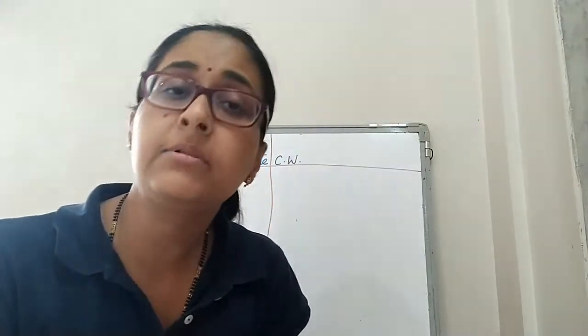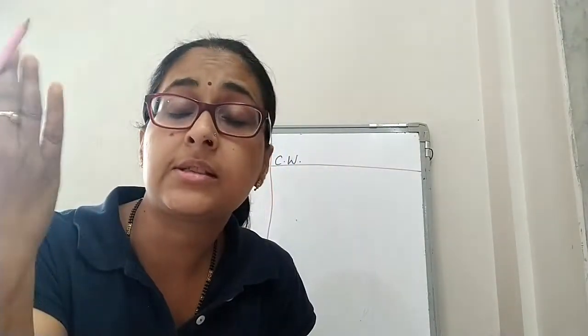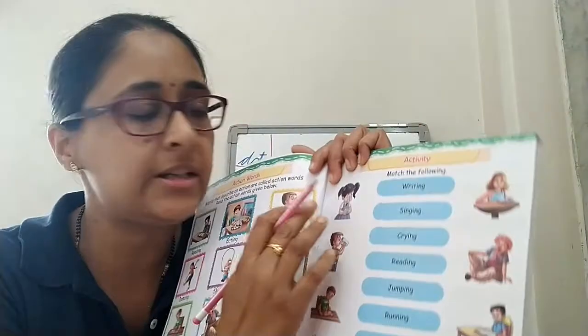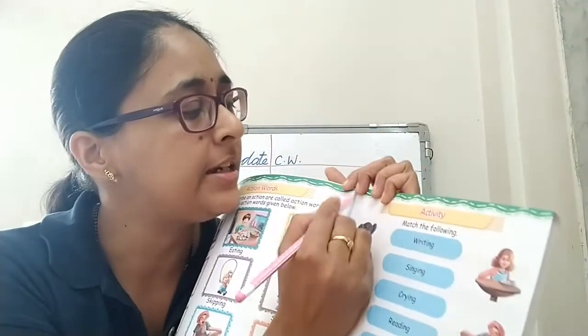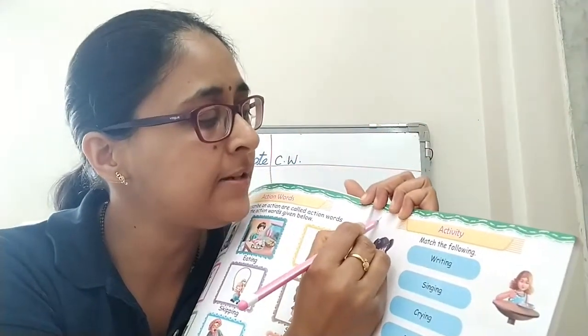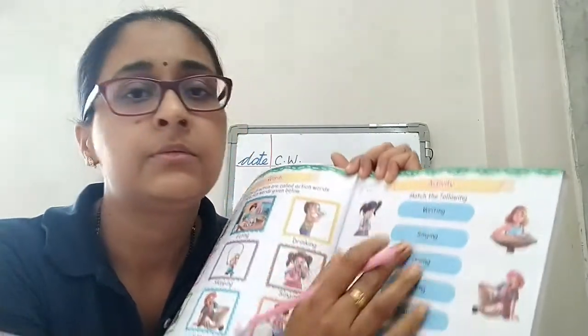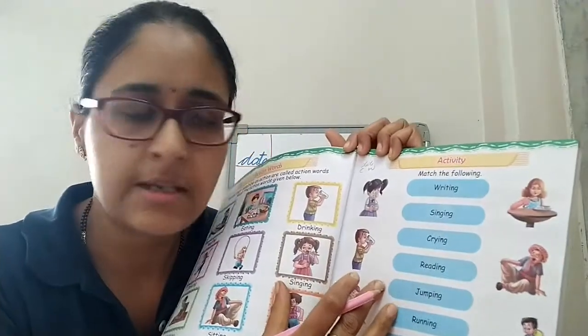Action words क्या होते हैं? वो words जो हमें यह बताएं कि हमने क्या काम किया है, हम क्या कर रहे हैं, या कोई क्या कर रहा है. ठीक है? चलो, let's do this activity. Write down date and CW.